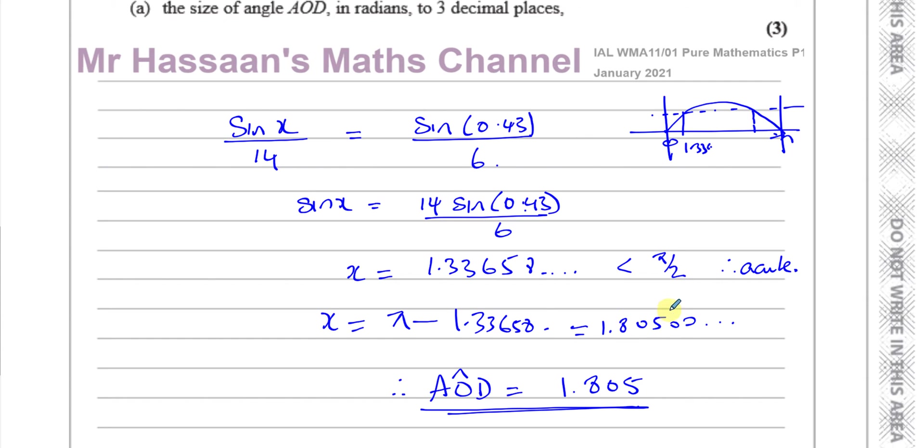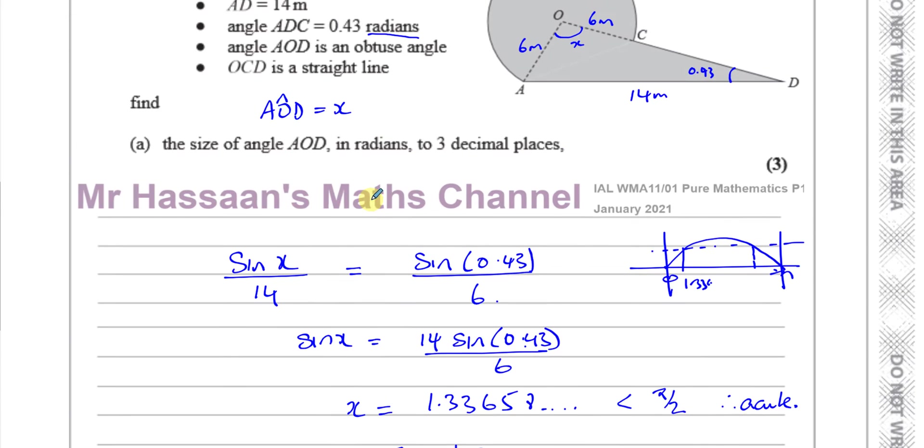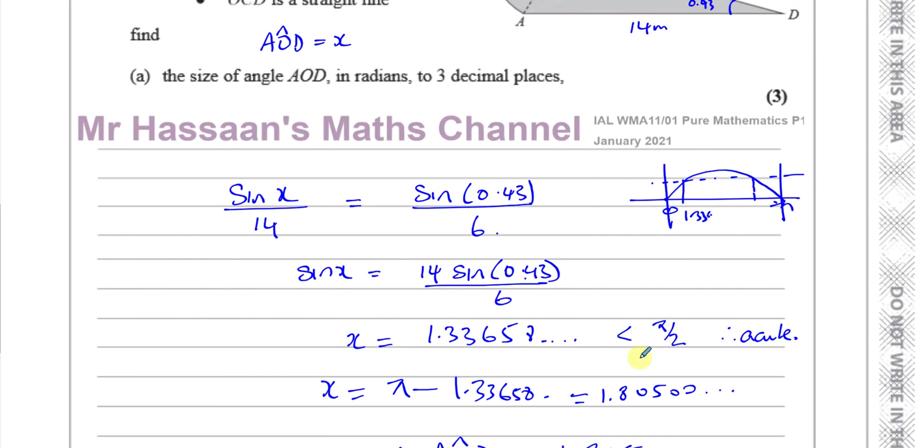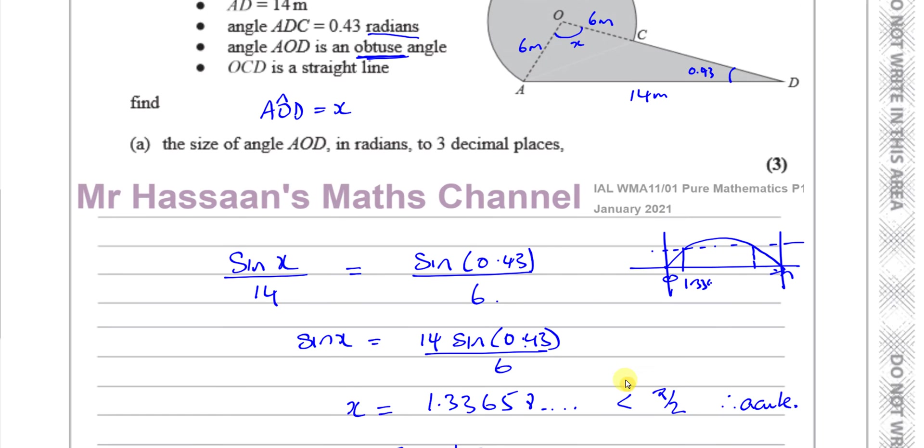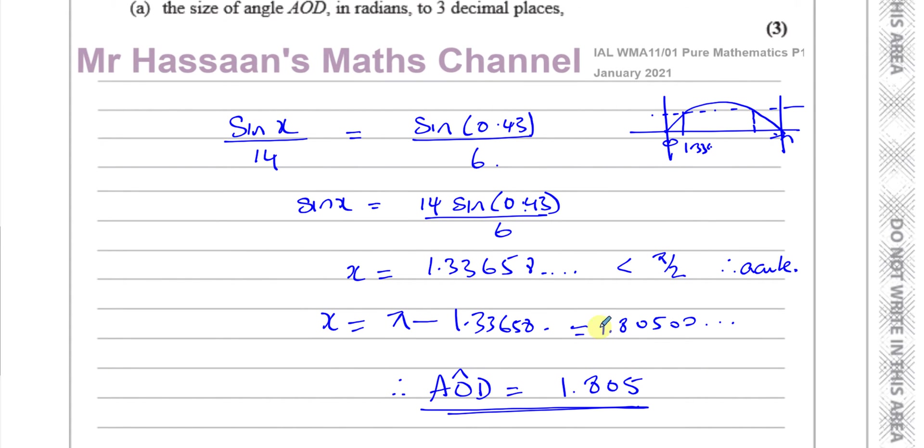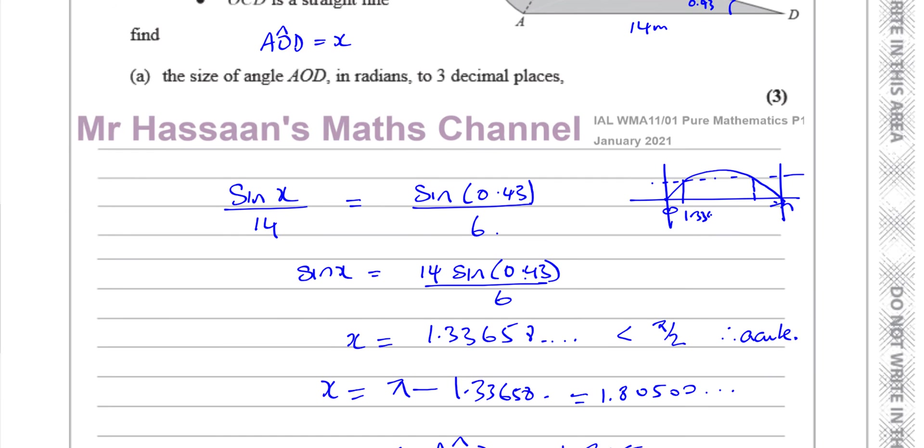Very important for you to realize that it tells us very clearly it's an obtuse angle. Whenever you see a question like this and it tells you it's obtuse, more often than not you're going to have to use the sine rule to find it. And when you use the sine rule to find it, the angle you're going to find is always going to be acute, because the calculator will always give you the value which is closest to zero. And you have to do 180 minus the angle to find the obtuse one, and 180 when you're talking about radians is pi radians. So that's something to watch out for. I'm sure a lot of people wrote the answer as 1.337 instead of 1.805 because of that reason.